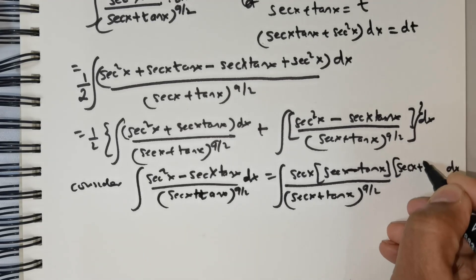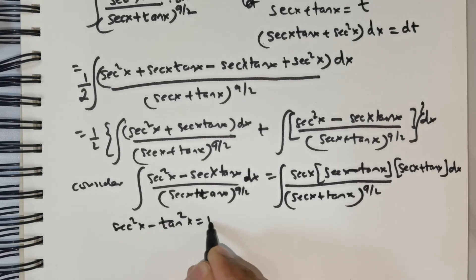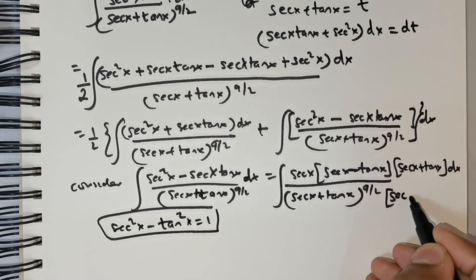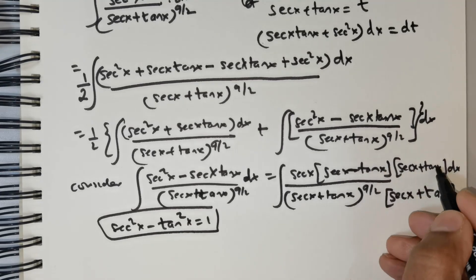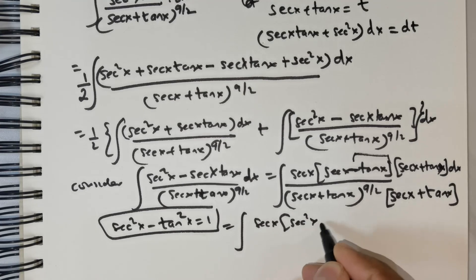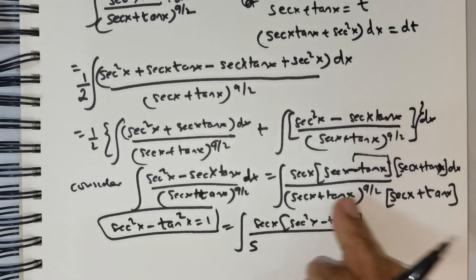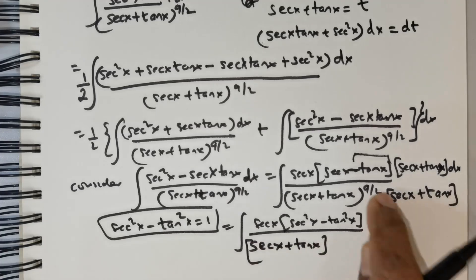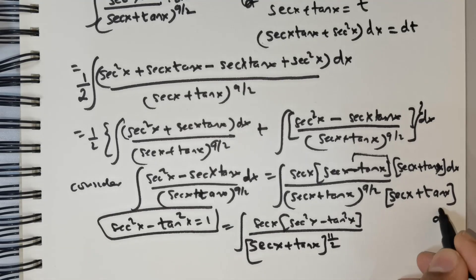Now I need to get rid of the secant x minus tan x in the numerator. I will multiply by secant x plus tan x, using the trigonometric identity that secant squared x minus tan squared x equals 1, so I am trying to create a 1 there. To keep the denominator balanced I also multiply it by secant x plus tan x, so they cancel. Multiplying gives the integral of secant x times the quantity secant squared x minus tan squared x, over secant x plus tan x raised to 9 over 2, times secant x plus tan x, yielding an exponent of 9 over 2 plus 1 equals 11 over 2.